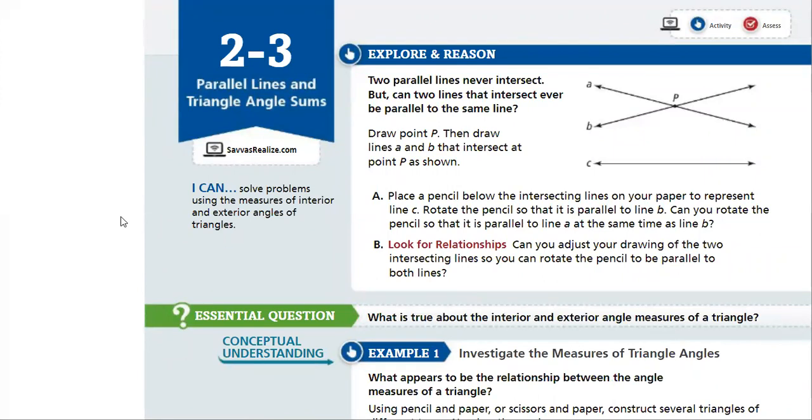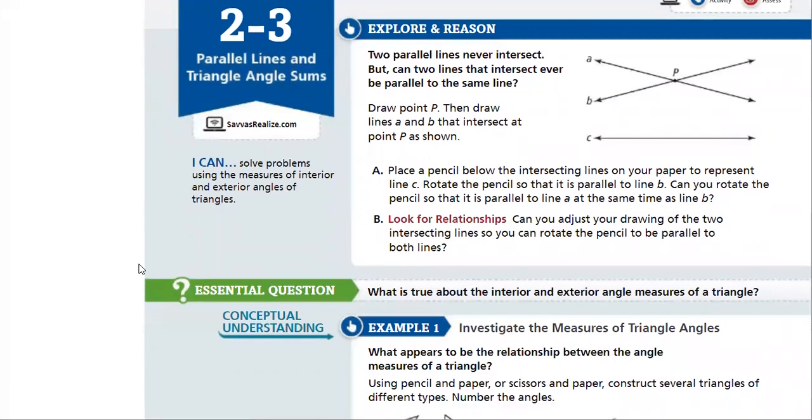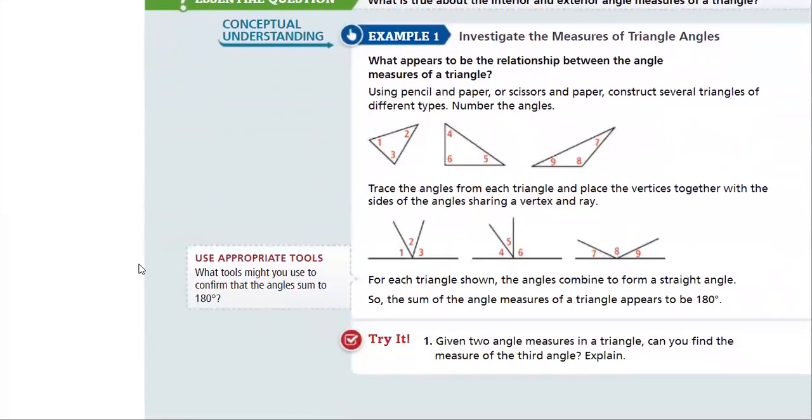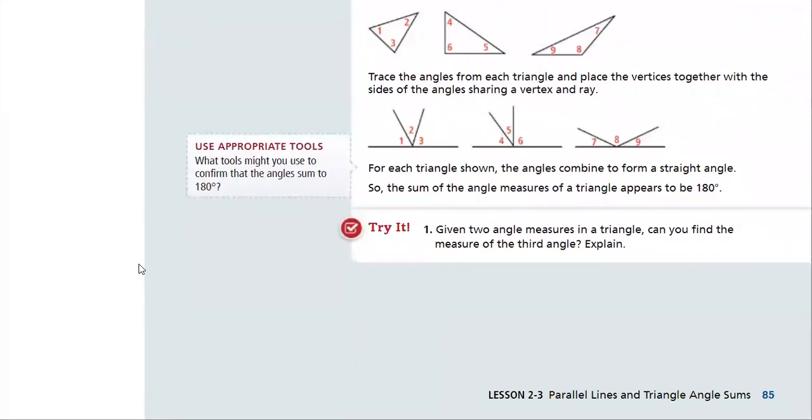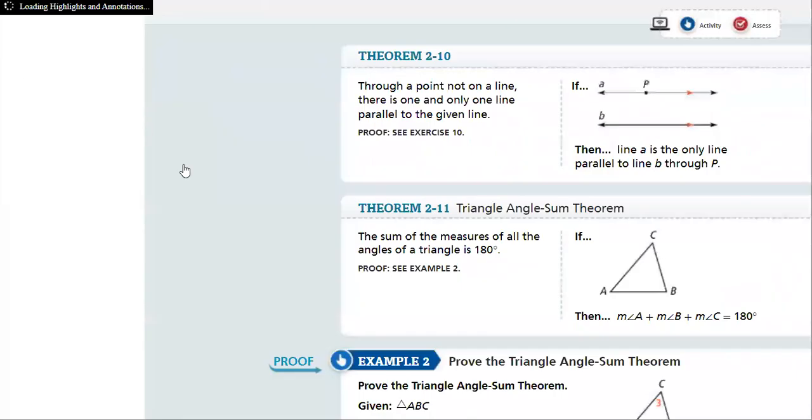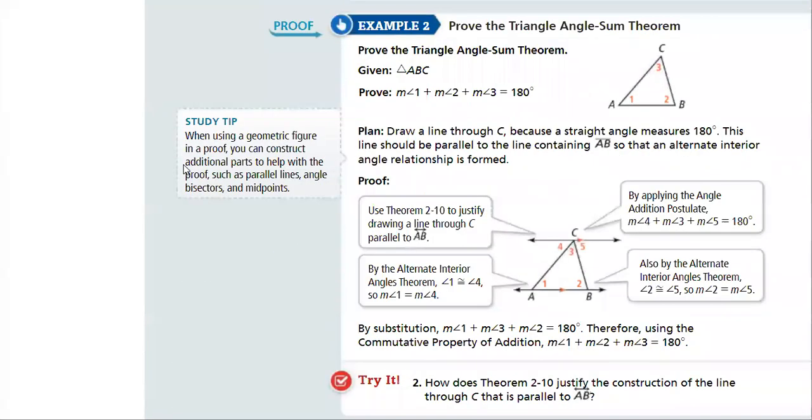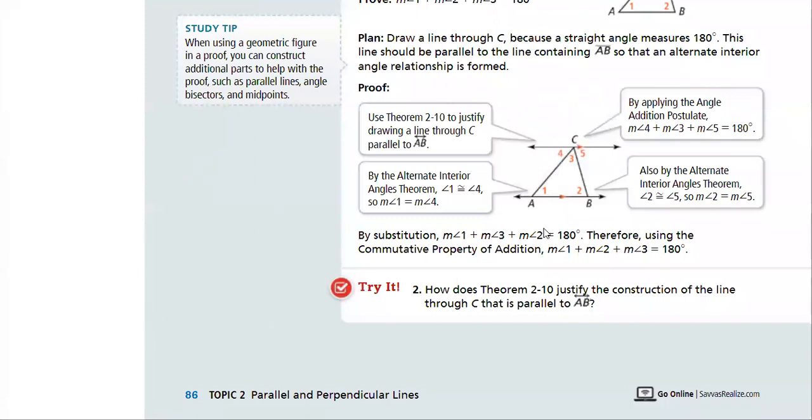Now here we will talk about parallel lines and triangle angle sums, how they are related. What is the measure of the angles of a triangle? We all know that the sum of the angles of a triangle is 180 degrees when you add all three angles. Here we have two lines and the relation between these lines together.